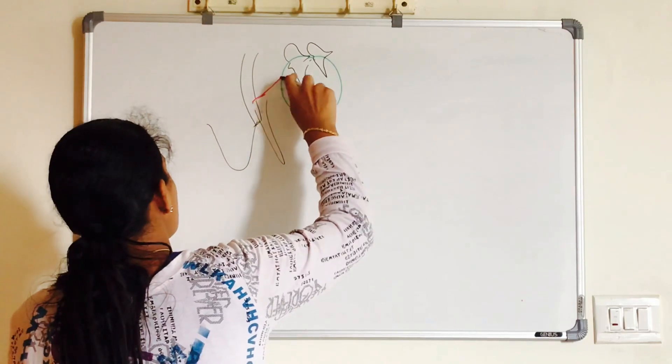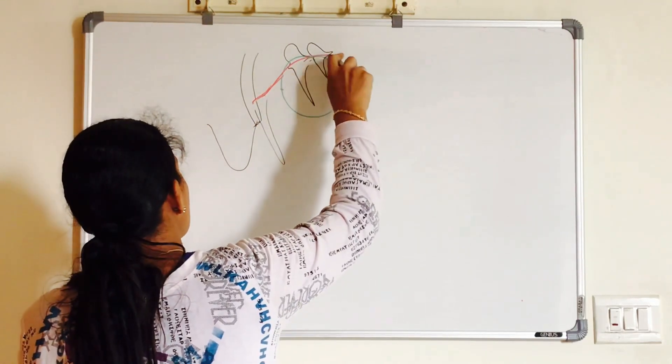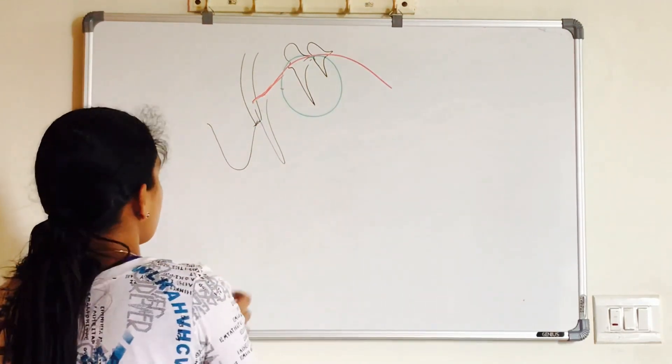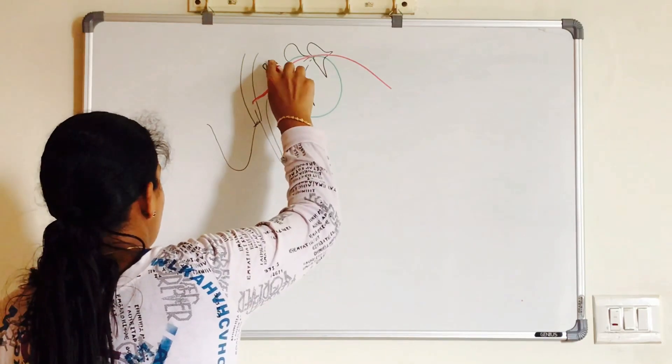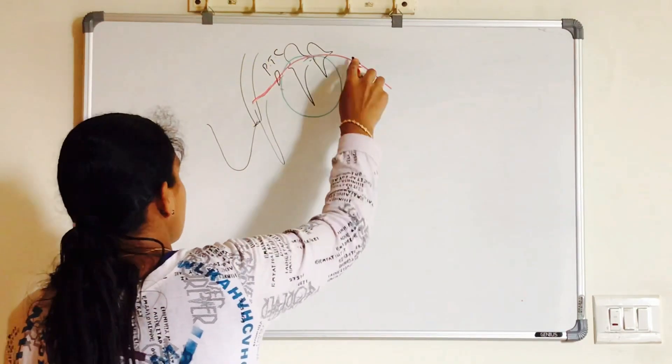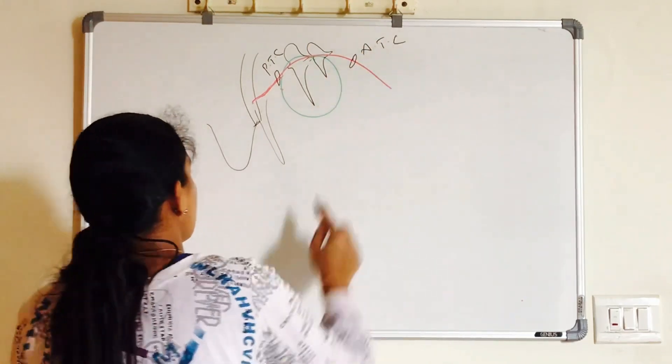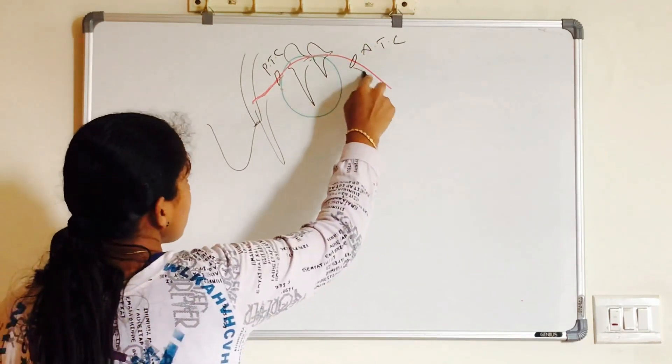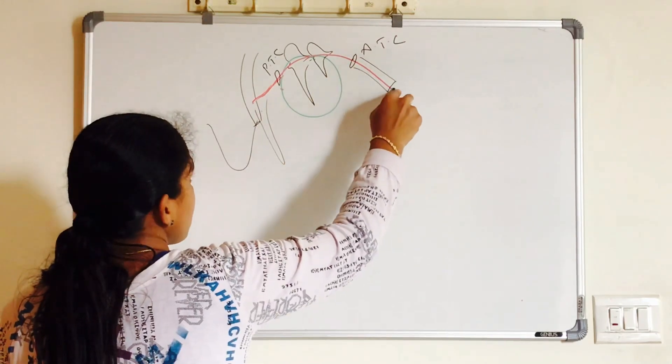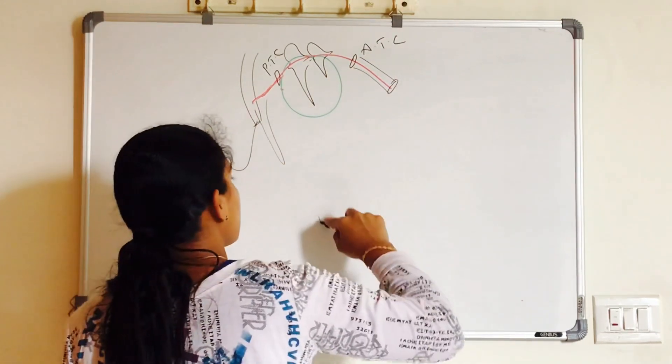This chorda tympani nerve runs above the tympanic membrane between pars flaccida and pars tensa. It enters through posterior tympanic canaliculus, emerges out through anterior tympanic canaliculus. Medial end of the anterior tympanic canaliculus is called petrotympanic fissure.